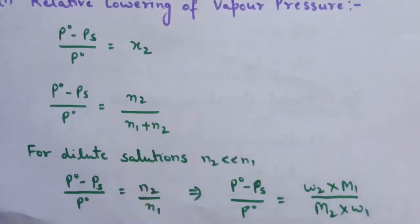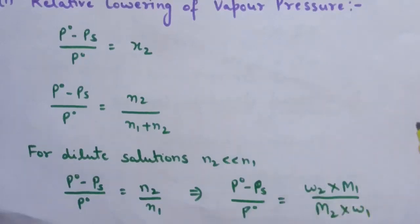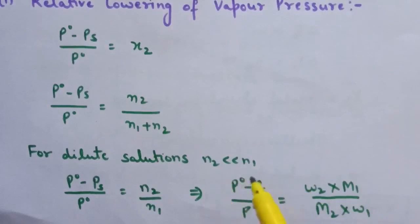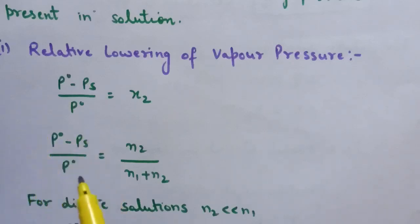For dilute solutions, N2 is much less than N1, so the expression simplifies to (P0 − Ps)/P0 = N2/N1. Here N2 is number of moles of solute (W2/M2) and N1 is number of moles of solvent (W1/M1). So the expression becomes (P0 − Ps)/P0 = (W2/M2) × (1/W1). P0 − Ps is the lowering in vapor pressure, and (P0 − Ps)/P0 is the relative lowering. From this, we can calculate the molar mass of solute if all other values are given. Since this depends upon the number of moles, it is a colligative property.